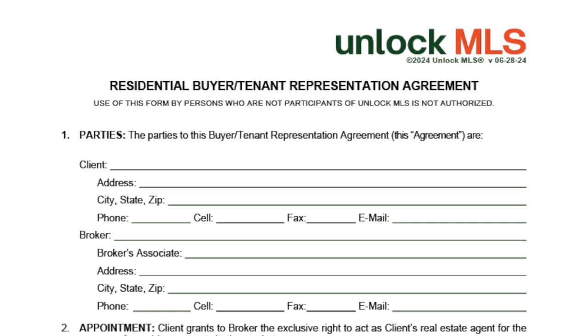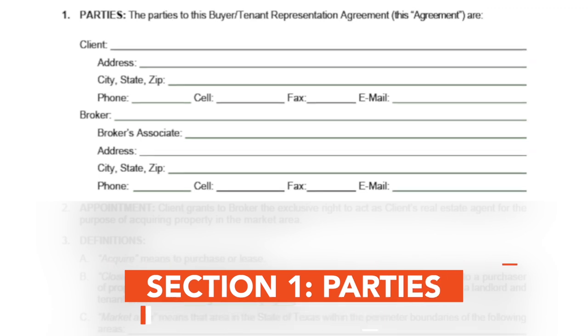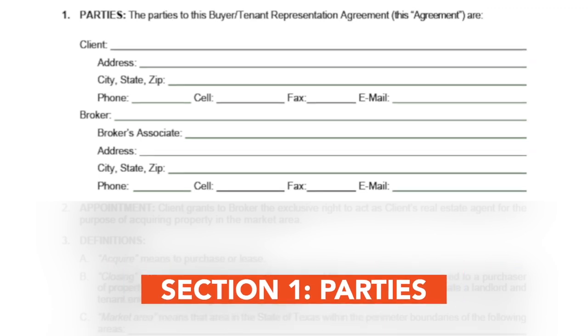Let's explore this form step by step. The first section of the form is Parties. It lists who is a party to this agreement. Take care to fill in all sections and include all the information you have.